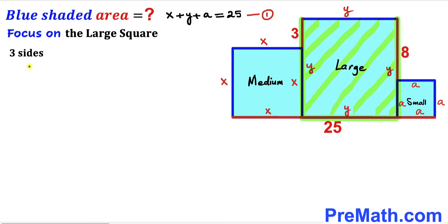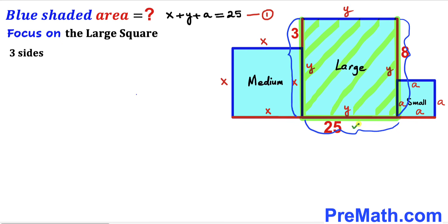Now let's focus on the large square and look at three of its sides. This side is going to be 3 plus x, this side is going to be y, and finally this side is going to be 8 plus lowercase a. So I'm going to add all these three sides: 3 plus x plus y plus 8 plus lowercase a.